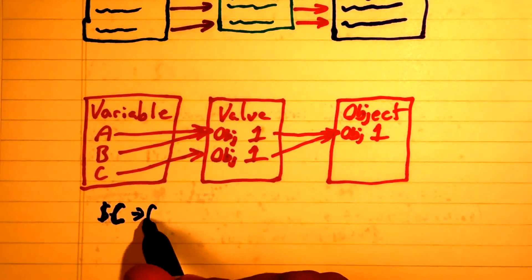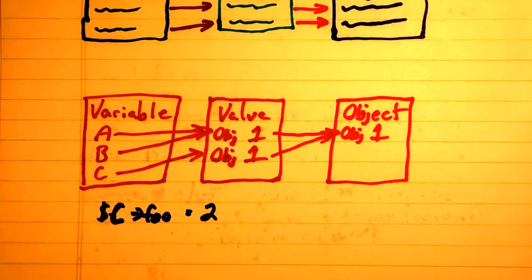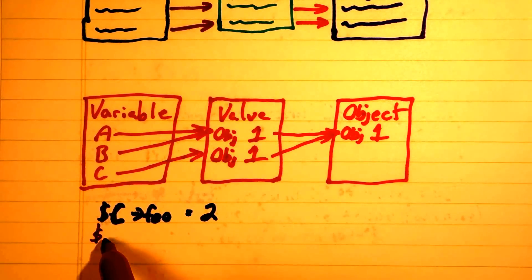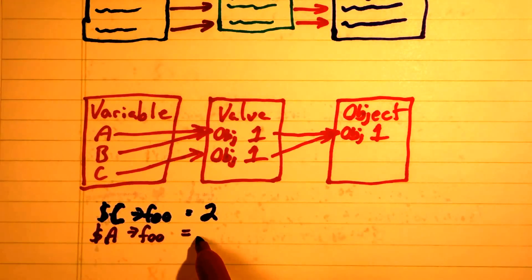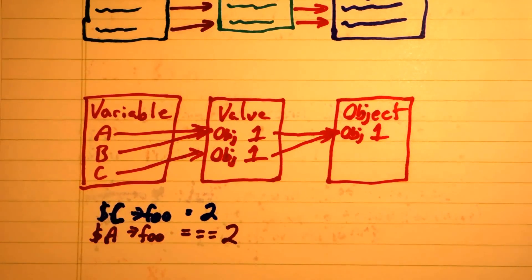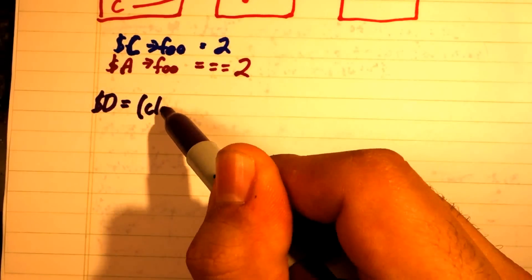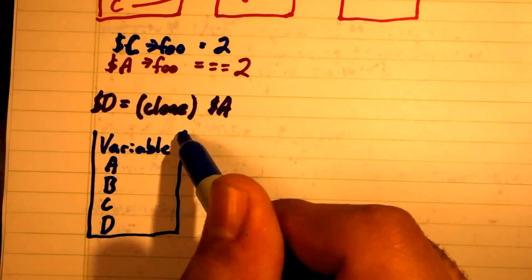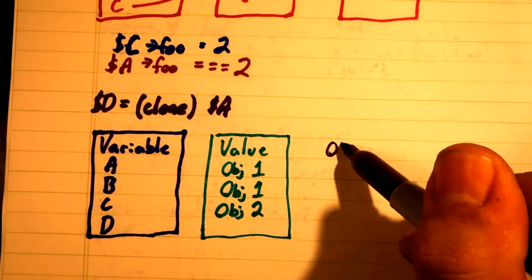What this means for us is that even if we copy an object variable, all edits still go to the same place. If we want to make an actual copy of an object value, we need to instead use the clone operator.